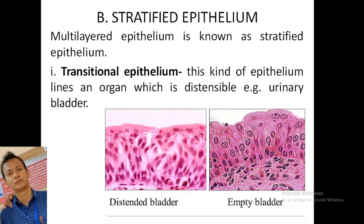Stratified epithelium is known as certified or multilayered epithelium. Transitional epithelium is a kind of epithelium that lines organs which need to stretch, for example the urinary bladder — it can distend when the bladder is empty.